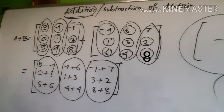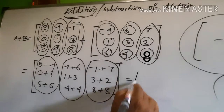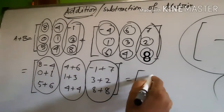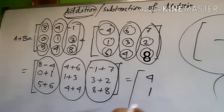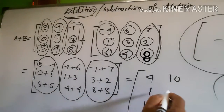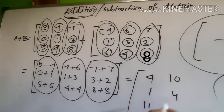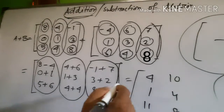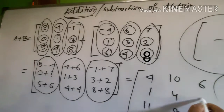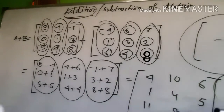Now we compute the addition. So we get: eight, four minus eight equals four, then eleven, ten, four, eight. Then six, sixteen. This is the answer of addition.